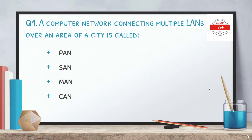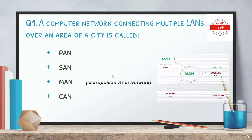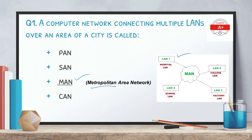The first question is: a computer network connecting multiple LANs over an area of a city is called PAN (personal area network), SAN (storage area network), MAN (metropolitan area network), or CAN. The correct answer is MAN. MAN stands for metropolitan area network and, as the name indicates, it spans over a city, connecting different LANs spanning over a city.